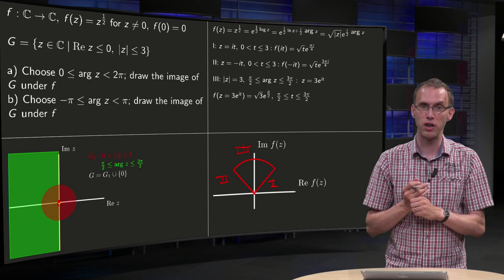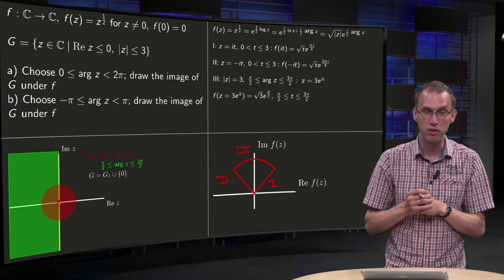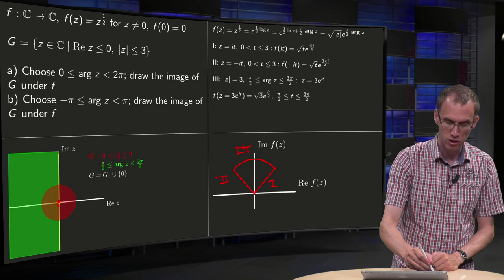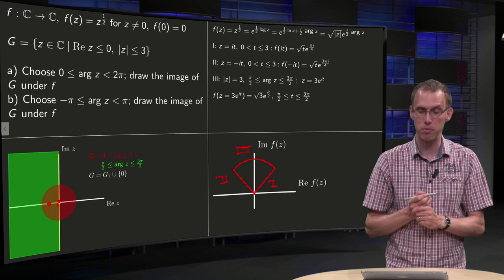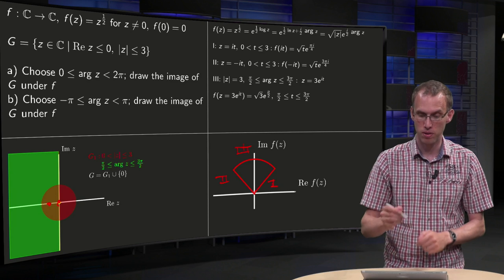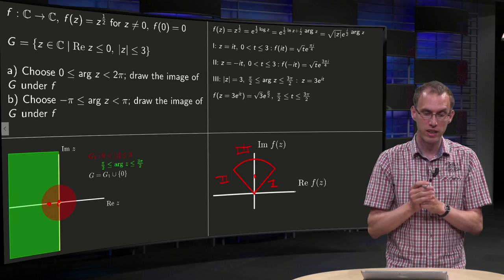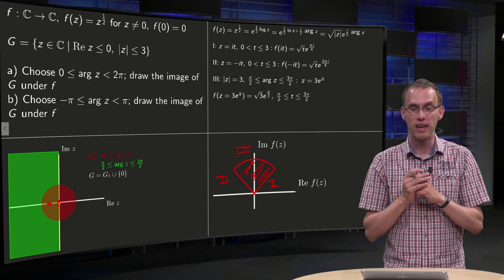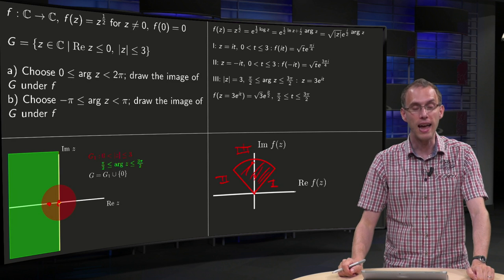You can, for example, figure out what's going on by taking some points in here, like see what happens to minus 1. You see that it gets to somewhere over here, so that your region G is mapped to the inside of your ice cone. So you will get the ice cone in this case. That's the answer to question A.